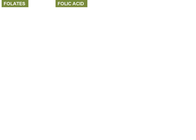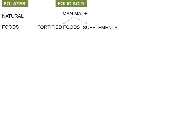Vitamin B9 is found as either folate or folic acid. Folate, the natural form of vitamin B9, is present only in foods. Folic acid, the man-made form of vitamin B9, is present in fortified foods and in supplements. Folate is unstable and folic acid is stable.